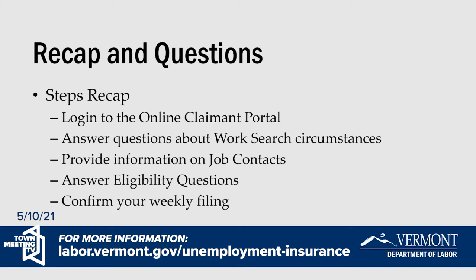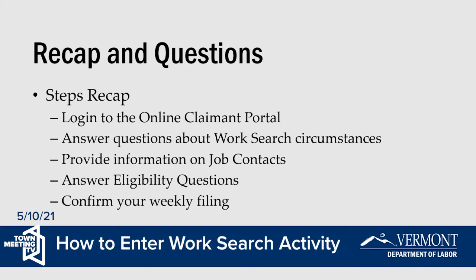After answering the five COVID exemption questions — you can answer yes or no to any or all of them — if you're exempt, you won't have to provide information on your job contacts and will move on to the eligibility questions as you normally would. If you are not exempt from work search, you'll be asked to provide information on each of your three job contacts. After submitting your job contacts, you'll move through to answer your eligibility questions and confirm your weekly filing.